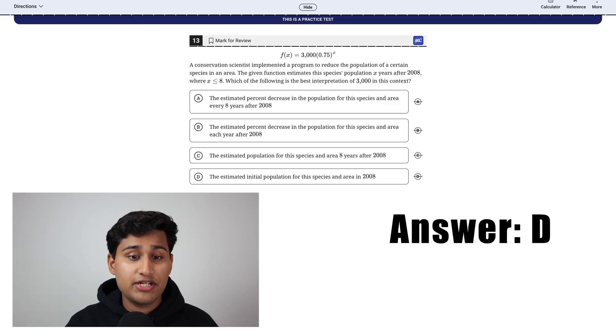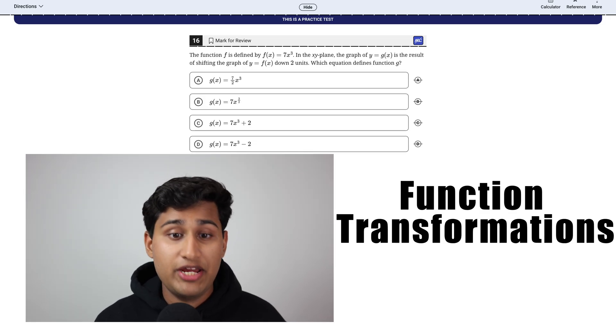Therefore the answer is D because if you plug in zero for X, which is the number of years that literally just gives you 3000 times one, which is 3000. So that means, you know, after zero years, AKA your initial value is 3000. So that's why the answer is D.